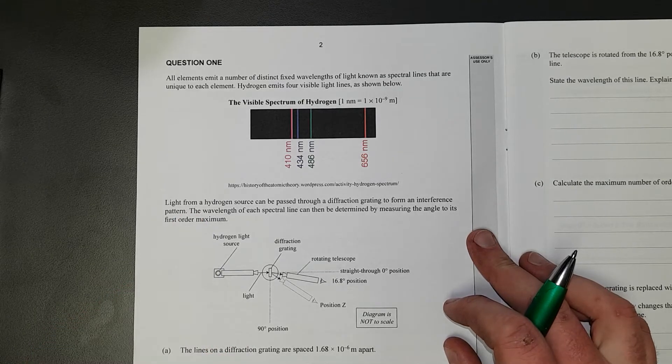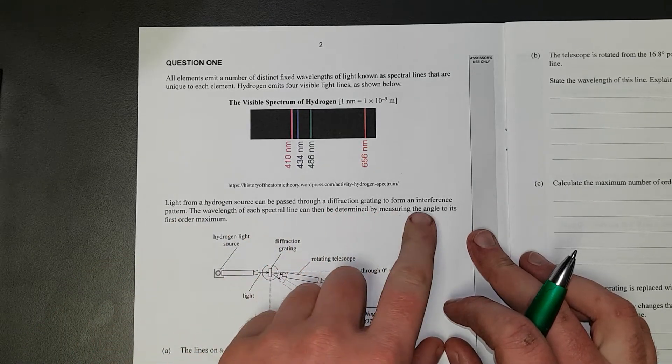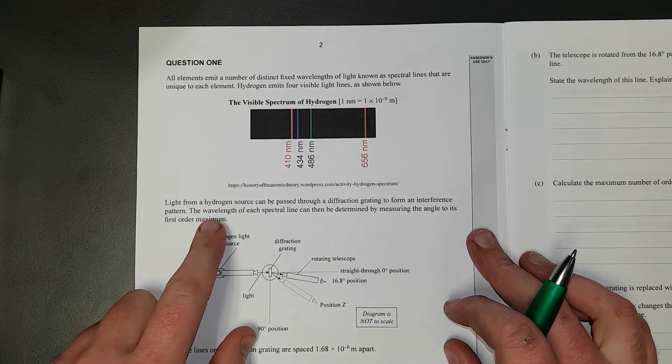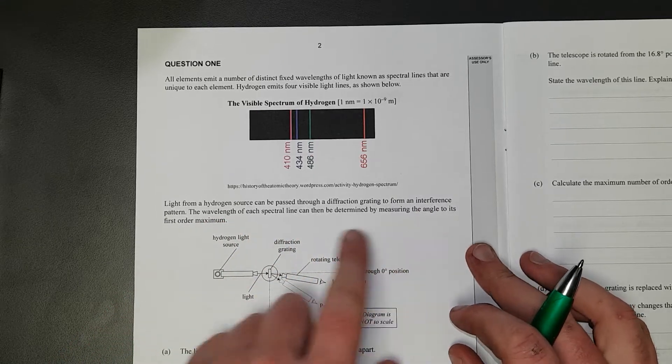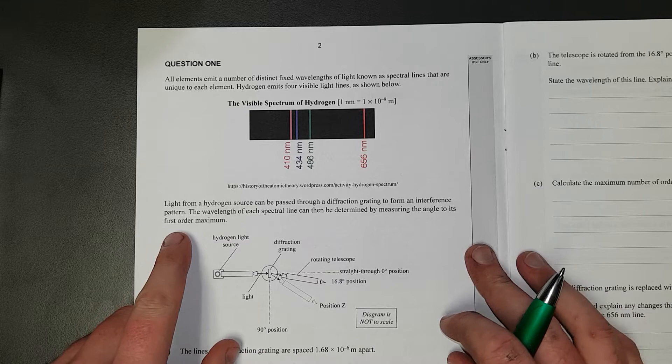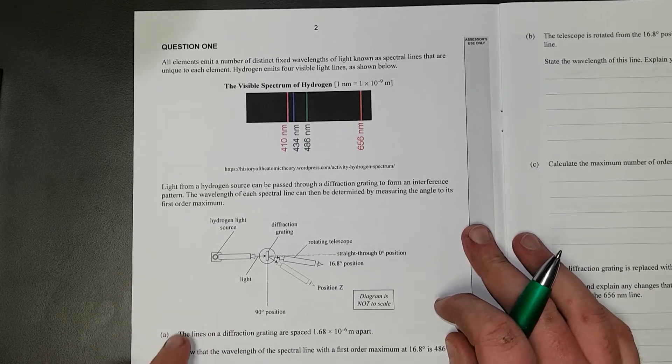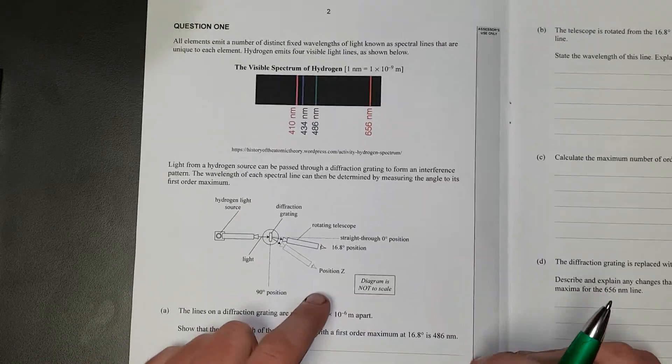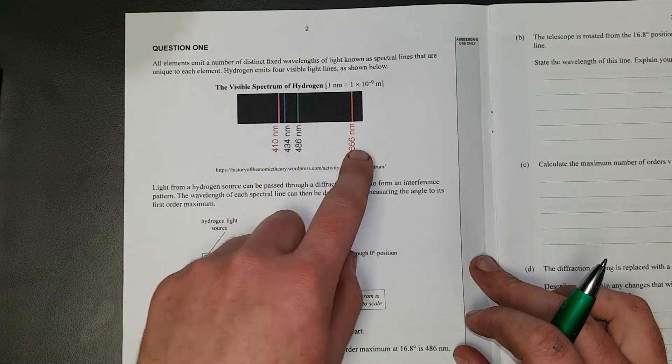Light from a hydrogen source can be passed through a diffraction gradient to form an interference pattern. The wavelength of each spectral line can then be determined by measuring the angle to its first order maximum. If you're colour blind, you're going to have a bad time, but whatever.